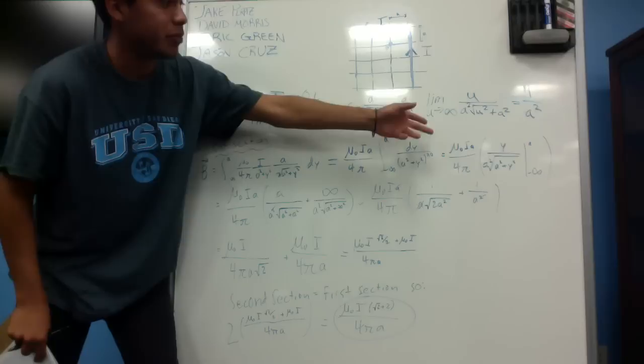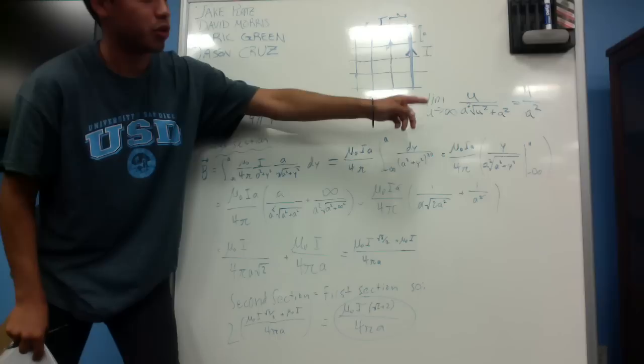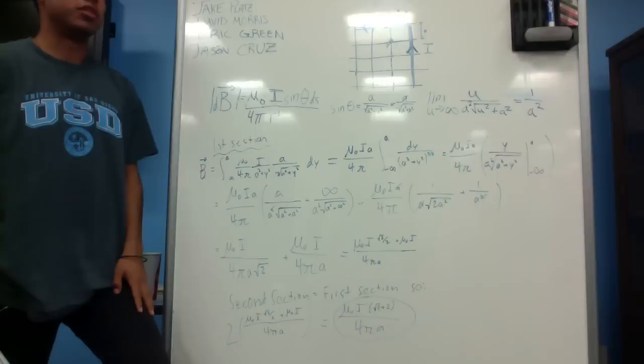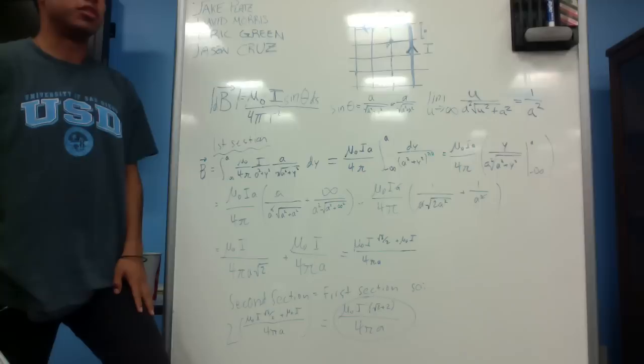And when we were looking through the worksheets, we also found this part of the problem right here, which is the limit as u approaches infinity of u over a squared times the square root of u squared plus a squared, gives us 1 over a squared, which would be useful in the problem later on.